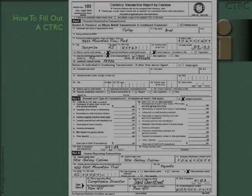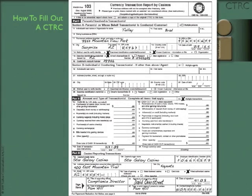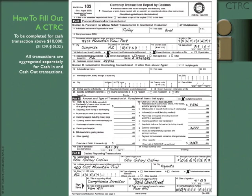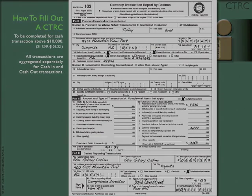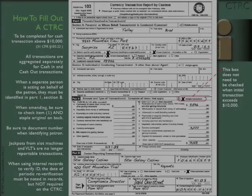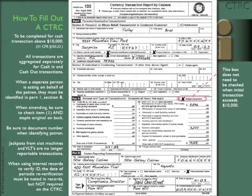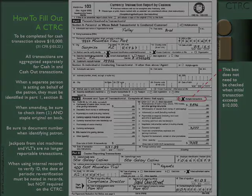Here is what a CTRC form looks like, and now we're going to learn how to fill it out. First, we have to remember that it is only to be completed for cash transactions above $10,000. Remember that item 30 of part 2 does not need to be checked when the initial transaction exceeds $10,000.